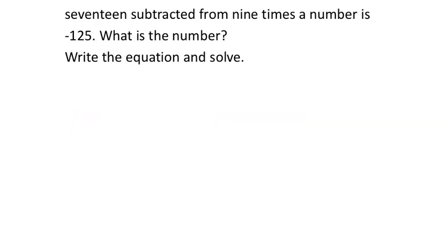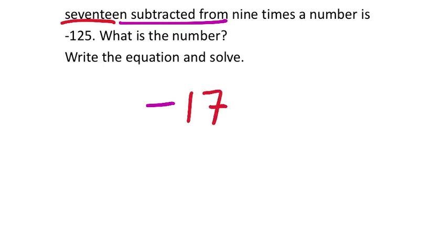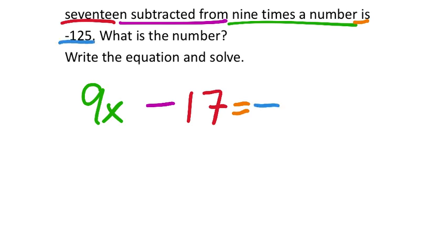Next problem: 17 subtracted from 9 times a number is negative 125. What is the number? The equation is: 9x − 17 = −125. This is probably two boxes on the assignment — one for the equation and one for the solution. To solve, add 17 to both sides: 9x = −125 + 17 = −108.